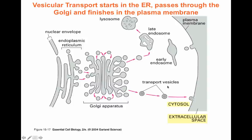Vesicles that are generated in the endoplasmic reticulum are going to be transported across the cell. They're going to pass through the Golgi apparatus, and on their way to the plasma membrane, they will be carried along microtubules until they fuse to the plasma membrane.